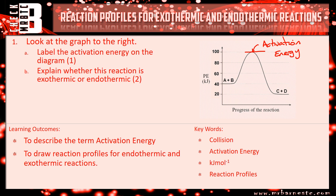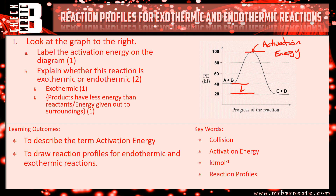Part B: explain whether the reaction is exothermic or endothermic. As you can see from the graph, it's a negative energy change. If it's negative it's going to be exothermic — one mark for that. Your explanation, which is that the products have less energy than the reactants, or that energy has been given out to the surroundings, would get you the second mark.